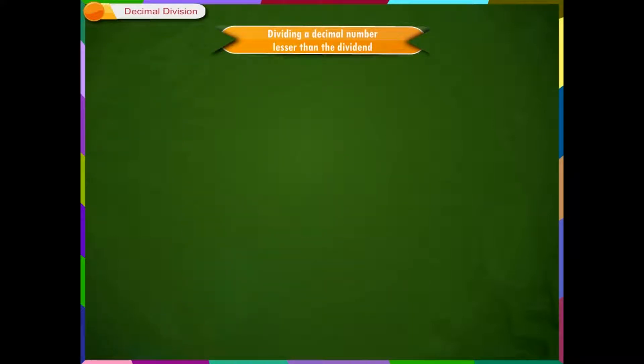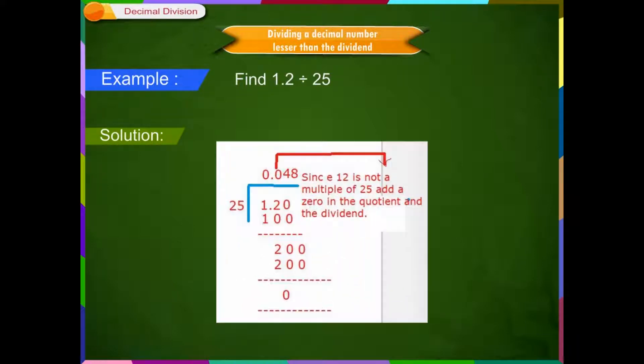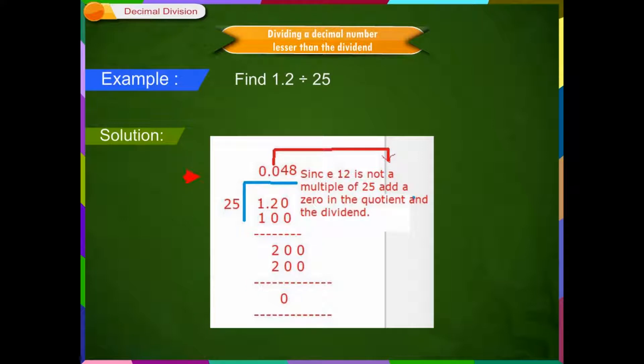Dividing a decimal number lesser than the dividend. Example: Find 1.2 divided by 25. Solution Step 1: Take 1 first, not divisible by 25, as 1 is less than 25, so put a 0 and a decimal point.